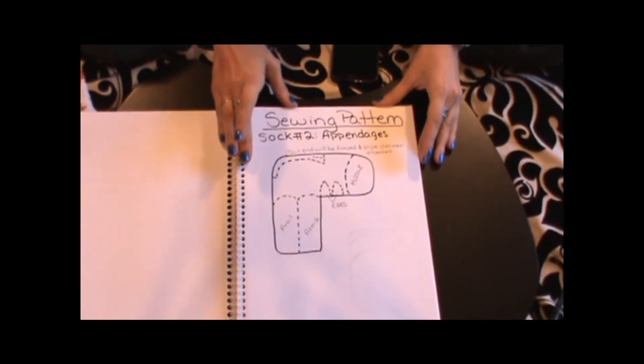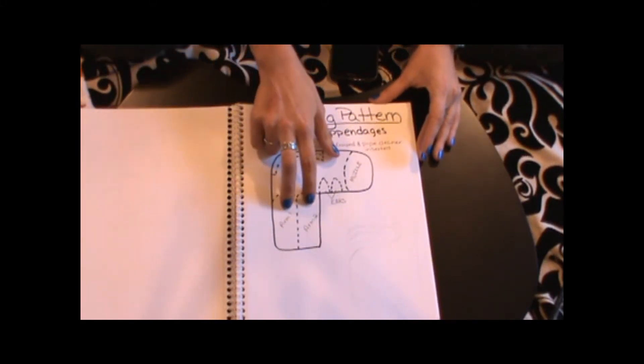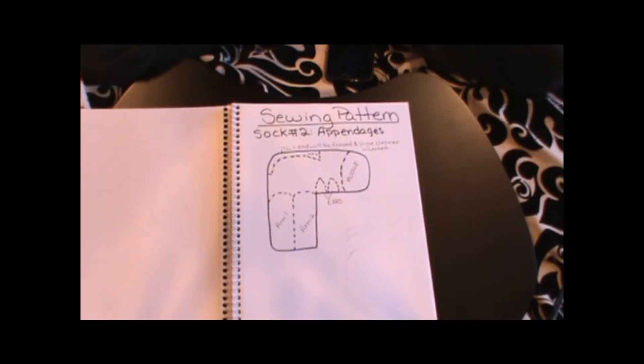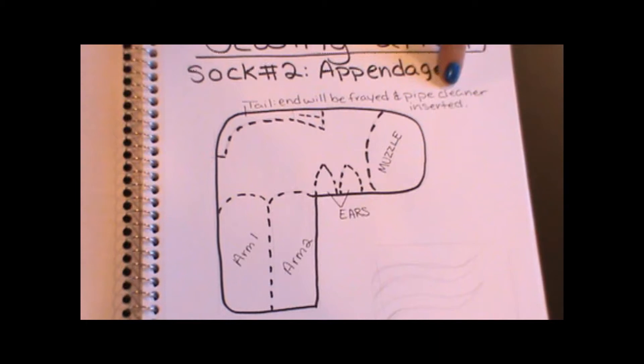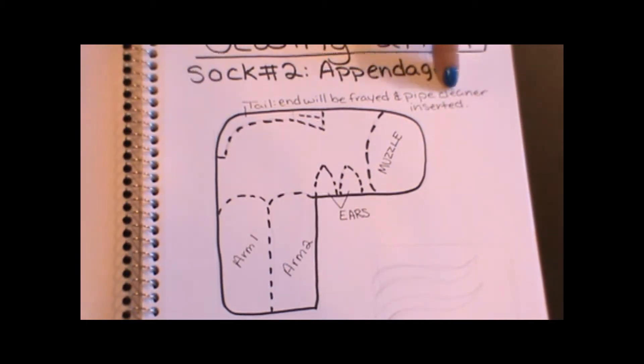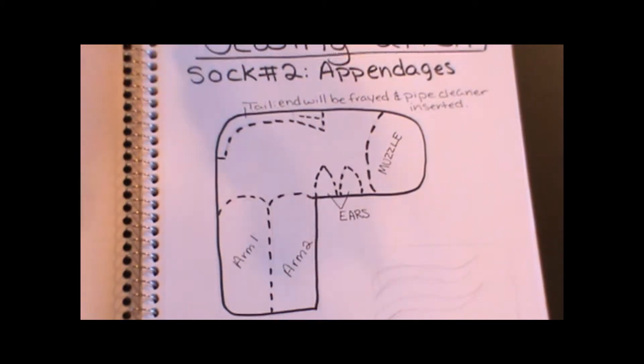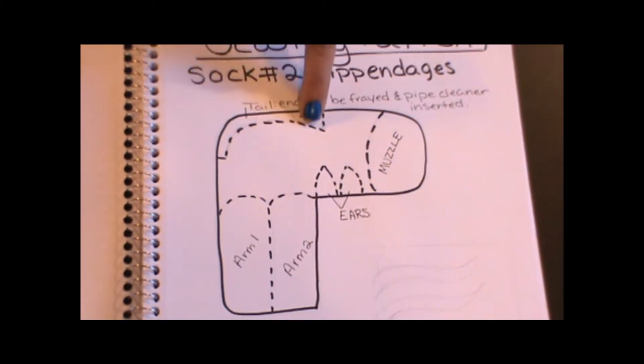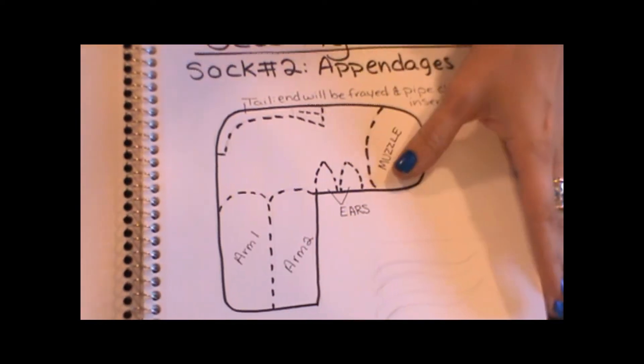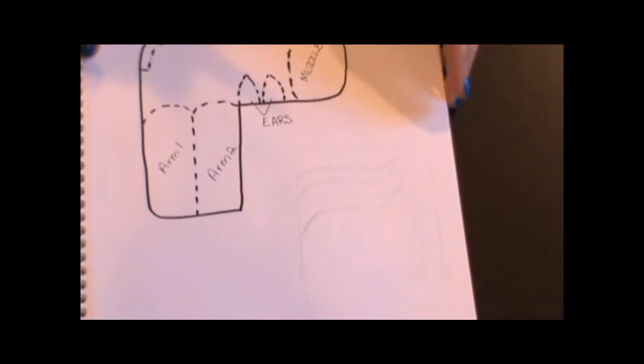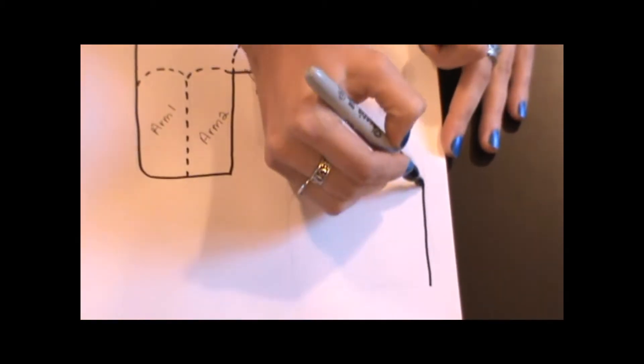The second one is for your appendages. So, for me specifically, I'm gonna have two arms. Let me zoom in for you. Then I have my tail. I went ahead and, if you have any specific ideas that you're doing, write them down. For this tail, I'm gonna cut it at the end and fray it so that will be the hair on the end of his tail. Then I have his ears, his muzzle, and then I'll draw it in right now.